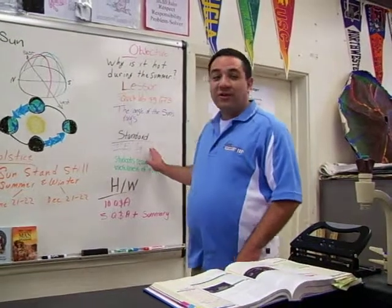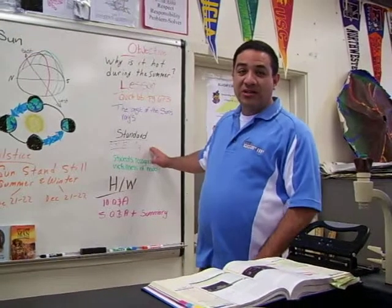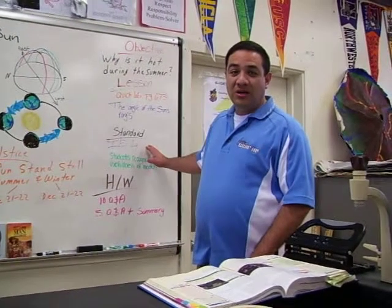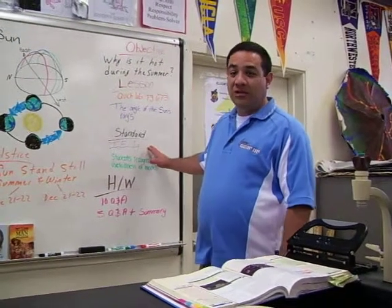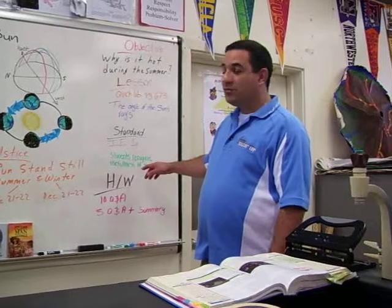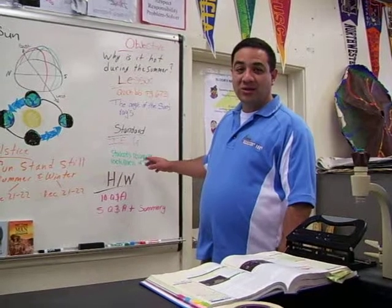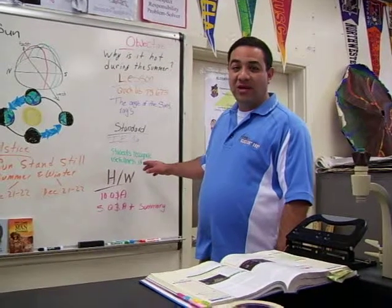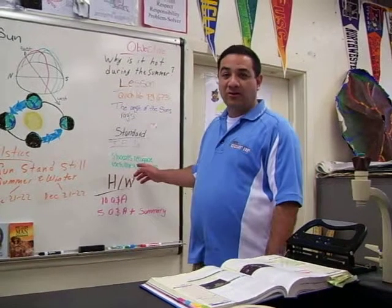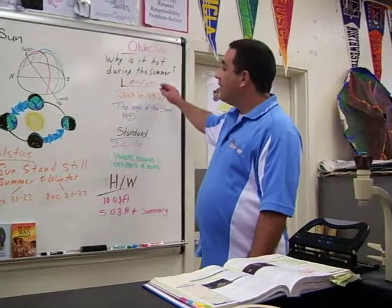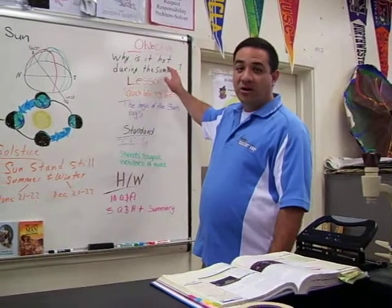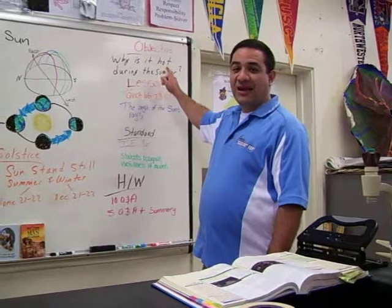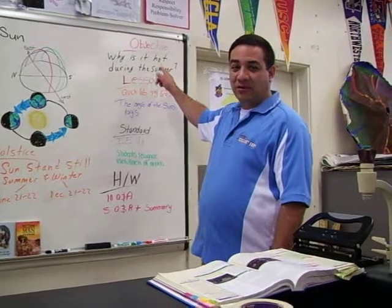The California Standard is Investigation and Experimentation 1G, which states that students will recognize the usefulness and limitations of using models. The objective question we're going to answer is: why is it hot during the summer?